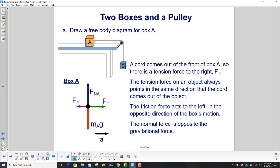Let's work with box A first. We have a cord coming out of box A, out of the front of it, so that's a tension force to the right, which we will call F sub T. The tension force on an object always points in the same direction that the cord comes out of the object. The friction force acts to the left, in the opposite of the box's motion. And then, of course, we have the normal force and the gravitational force, up and down.